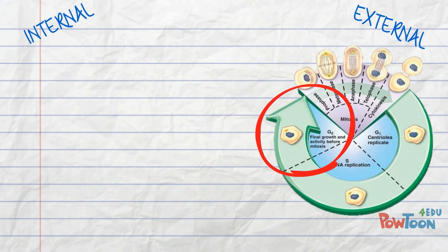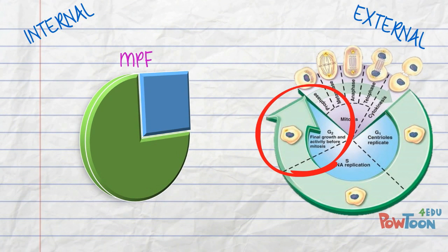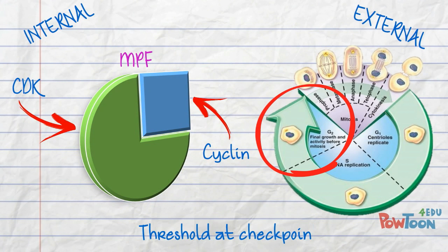In the G2 phase, an internal factor called MPF, which is made up of the protein CDK and cyclin, is going to gradually accumulate throughout the cycle until a threshold level is met. At this stage, the cell is going to move through to mitosis.